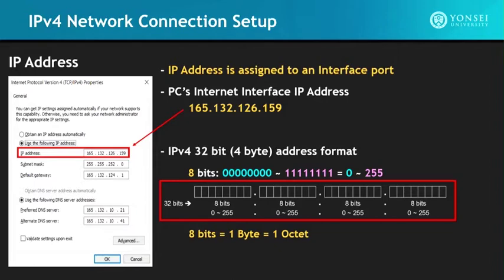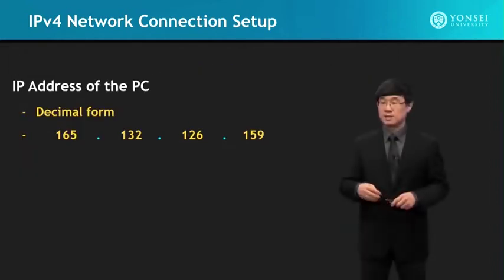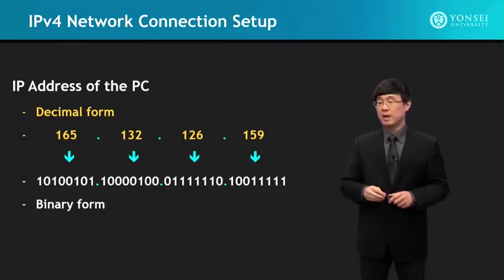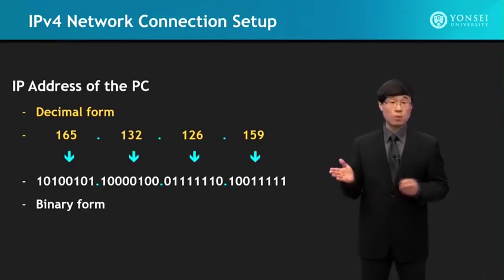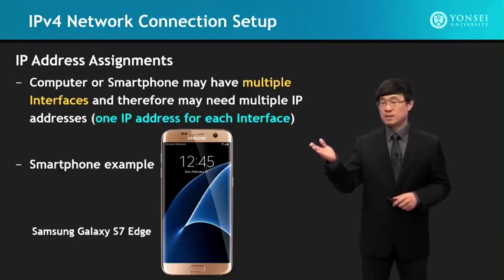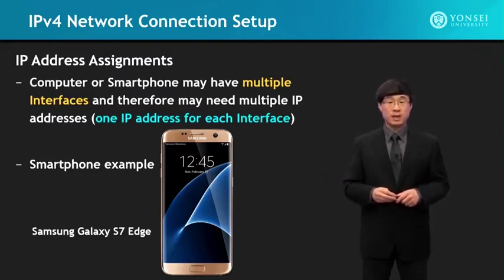If you look at the IP address assignment, 165.132.126.159 would map into the binary sequence shown here — this is the binary form and how we represent the IPv4 address. IP addresses are assigned to each interface, and a computer or a smartphone may have multiple interfaces, and therefore they will need multiple IP address assignments — one IP address for each interface is required.